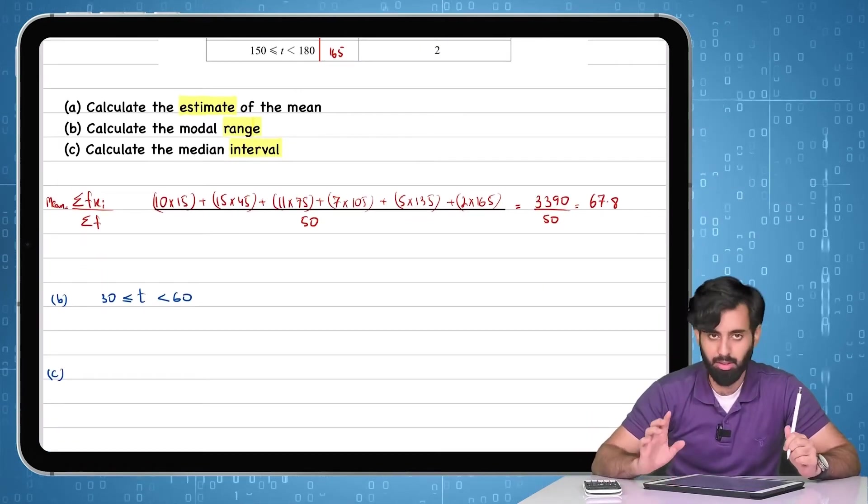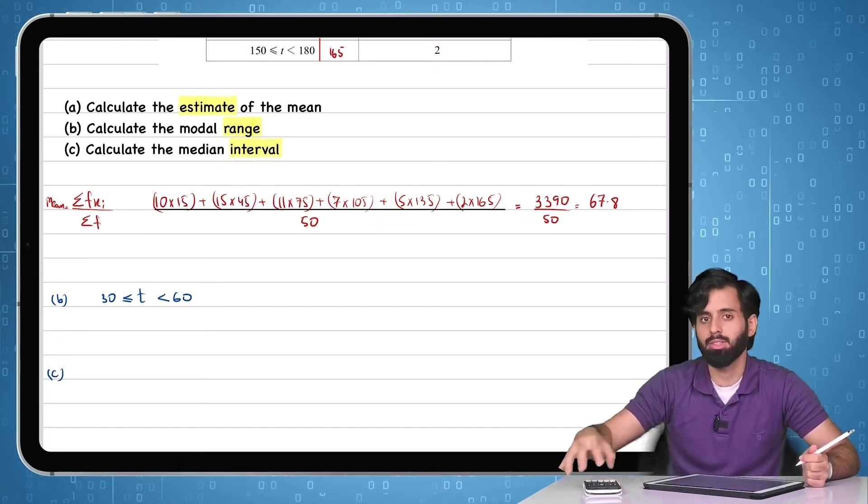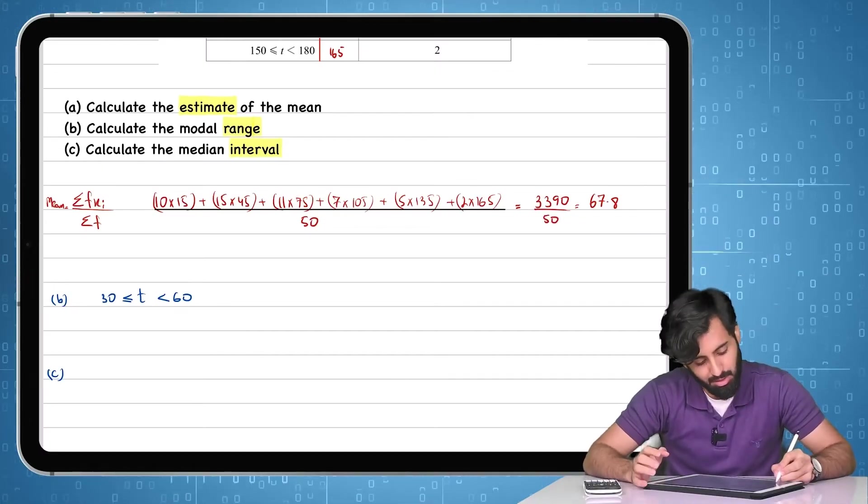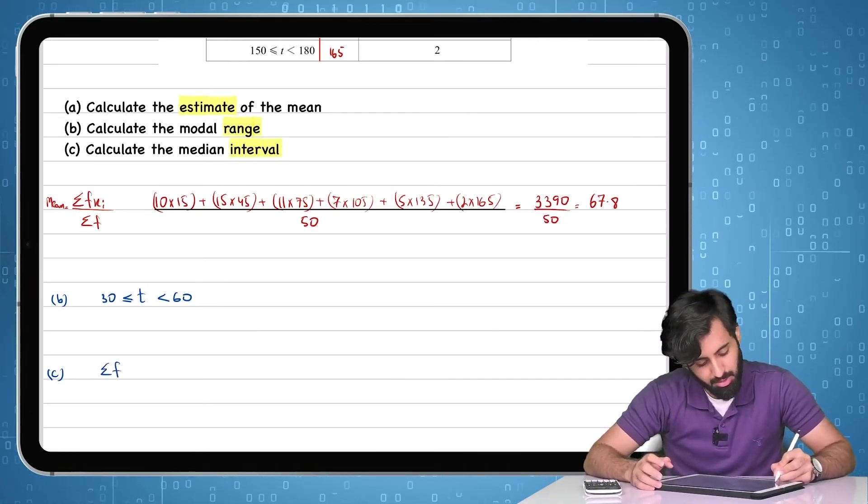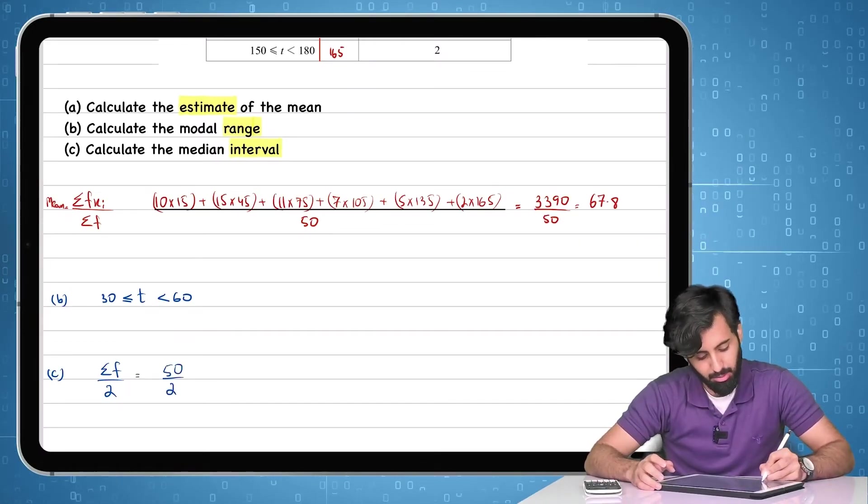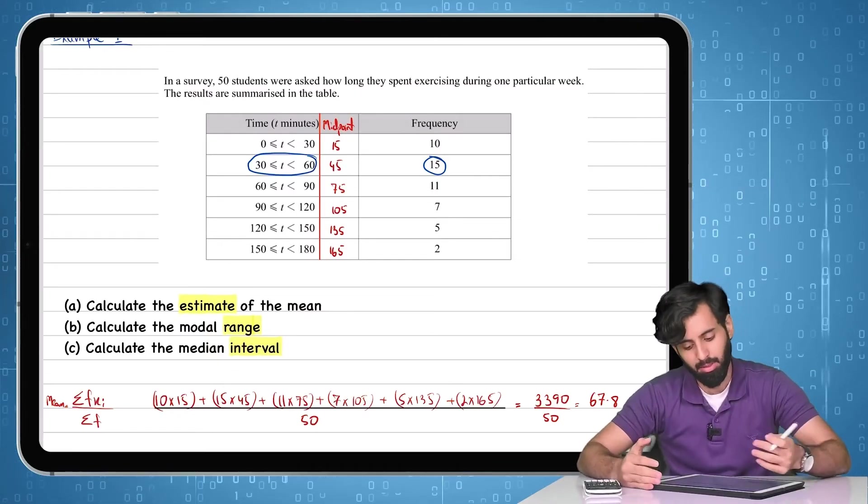Now here, the formula for calculating the median is slightly different. Since we don't have individual values here, we're not going to add one to our total frequency. Instead, we're going to take the total frequency simply divided by two. So that means I'll take 50 divided by 2, which is equal to 25.